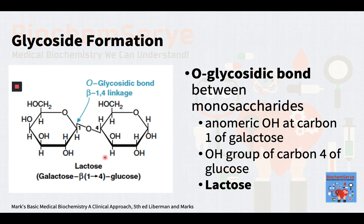This is an example of an O-glycosidic bond formed between two sugars forming a disaccharide. An O-glycosidic bond joins the anomeric OH at C1 of galactose to the OH group of C4 of glucose, with the removal of water. The disaccharide lactose, which is found in milk, is thus formed.